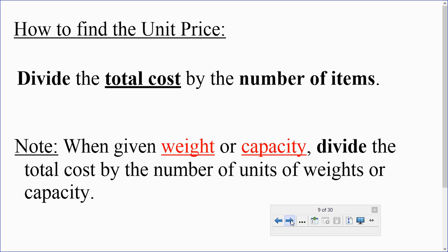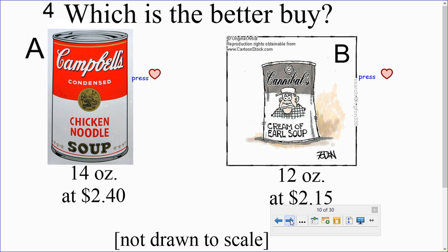How to find the unit price. Divide the total cost by the number of items. When you're given a weight or a capacity, divide the total cost by the number of units or weights or capacity. So, let's try an example.